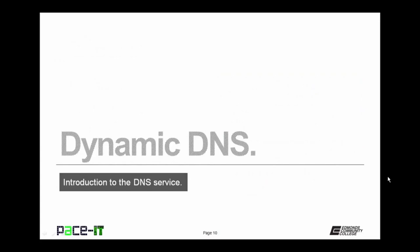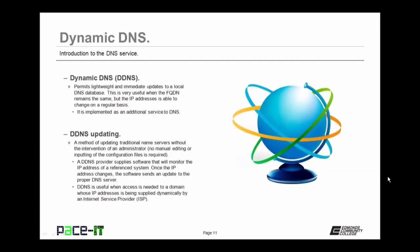Now let's move on to dynamic DNS. Dynamic DNS, or DDNS, permits lightweight and immediate updates to a local DNS database. This is very useful for when the FQDN or host name remains the same but the IP address is able to change on a regular basis. Dynamic DNS is implemented as an additional service to DNS, through DDNS updating — a method of updating traditional name servers without the intervention of an administrator. So there's no manual editing or inputting of configuration files required.